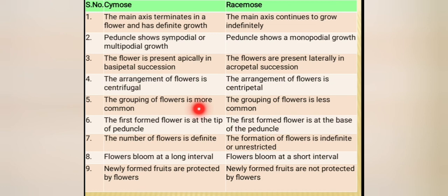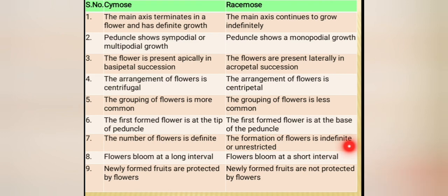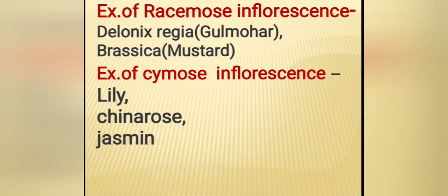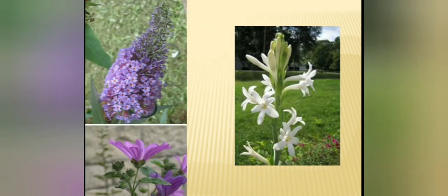Grouping of flowers is more common in cymose, less common in racemose. In cymose, first flower forms at the tip. In racemose, first flower forms at the base of the peduncle. Number of flowers is definite in cymose, indefinite or unrestricted in racemose. Flowers bloom at long intervals in cymose, short intervals in racemose. Examples of racemose inflorescence: Gulmohar (Delonix regia) and Brassica (mustard). Examples of cymose inflorescence: lily, China rose, and jasmine.